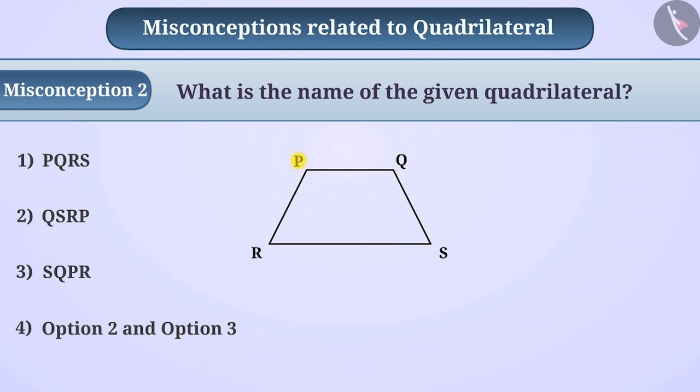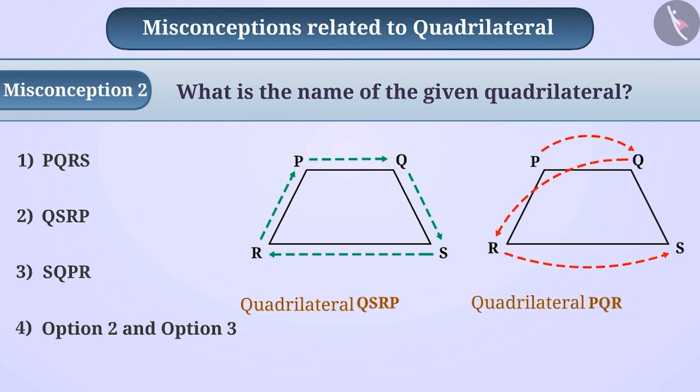the vertices have been named from P to S. Children ignore the sequence of vertices, giving the name of the quadrilateral as PQRS, which is the incorrect way to name a quadrilateral.